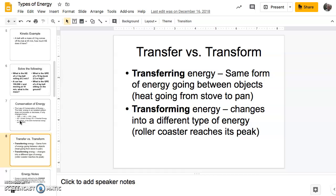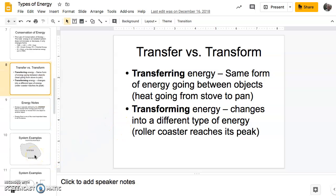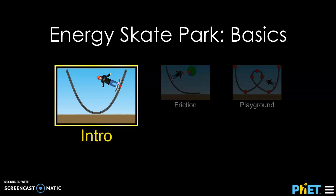Right, so I could do the same thing with energy. I can push, let's say, a shopping cart. I am transferring kinetic energy from myself to that shopping cart. Now, if I transform something, now I'm thinking about the movie Transformers. The actual type of energy is changing in itself. So I might hold a golf ball up and drop it. It's going to start with potential energy. It's going to transform into kinetic energy. Okay, so those are the main talking points there.